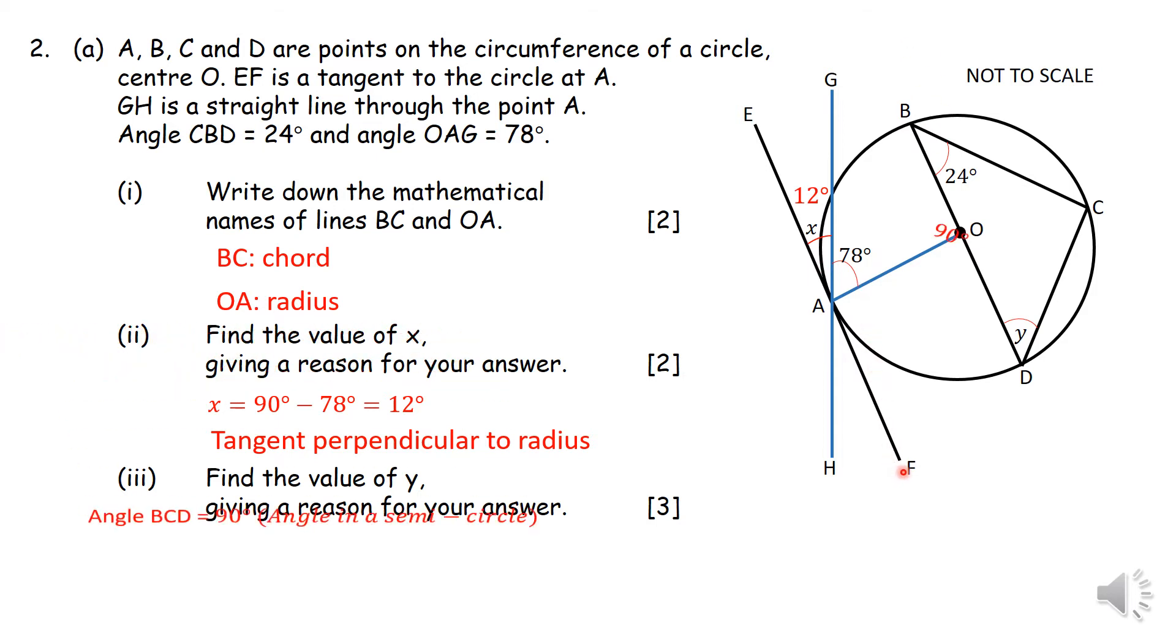Then they want you to find y. So this is an angle or a triangle in a semicircle. And I hope you remember that any point C that is in a semicircle will be 90 degrees. Therefore, you can use angle sum of a triangle to find the value of y. And the value of y is nothing but 66 degrees. And your reasons, you write them next to your answers to justify the reasons that you give.